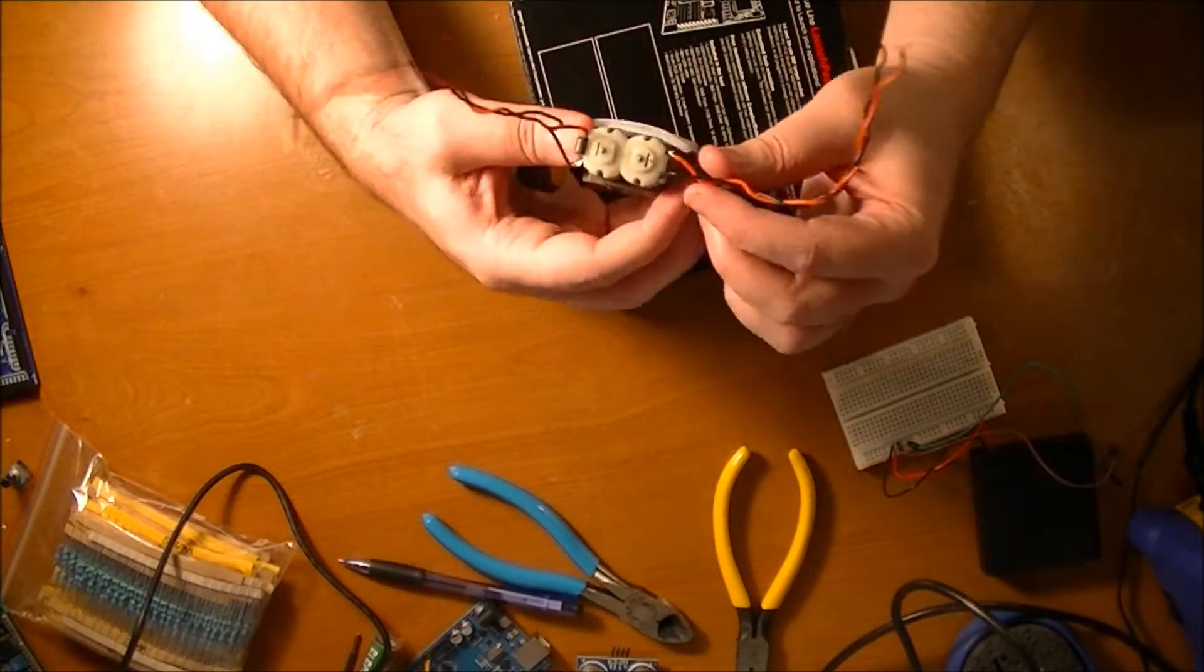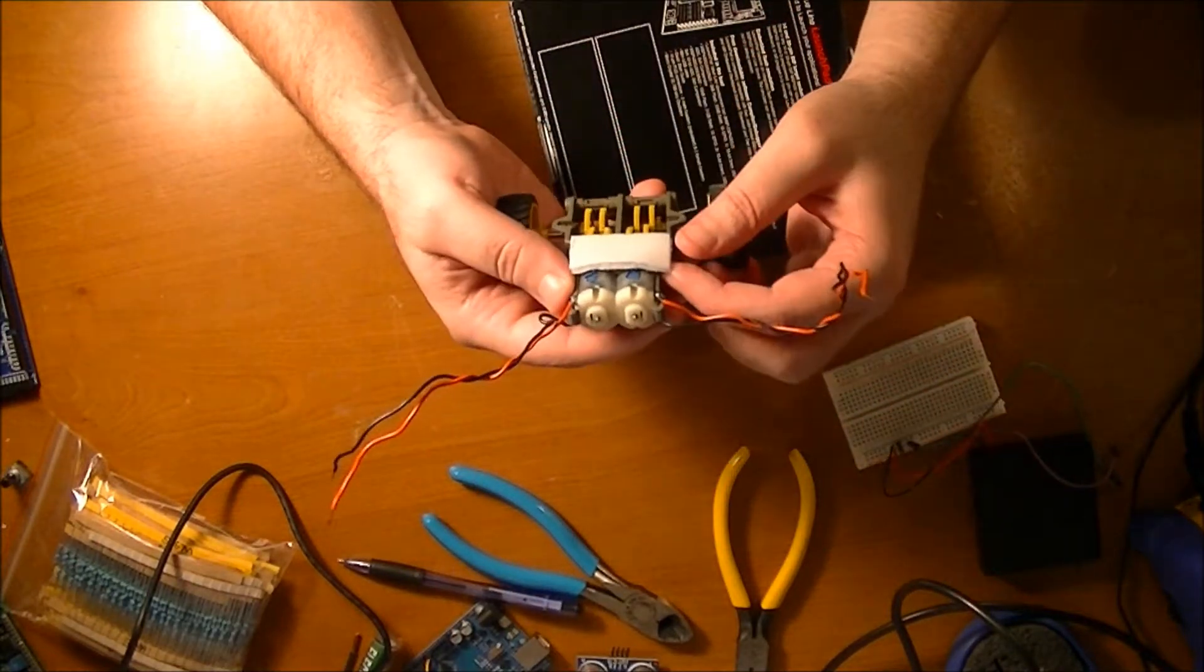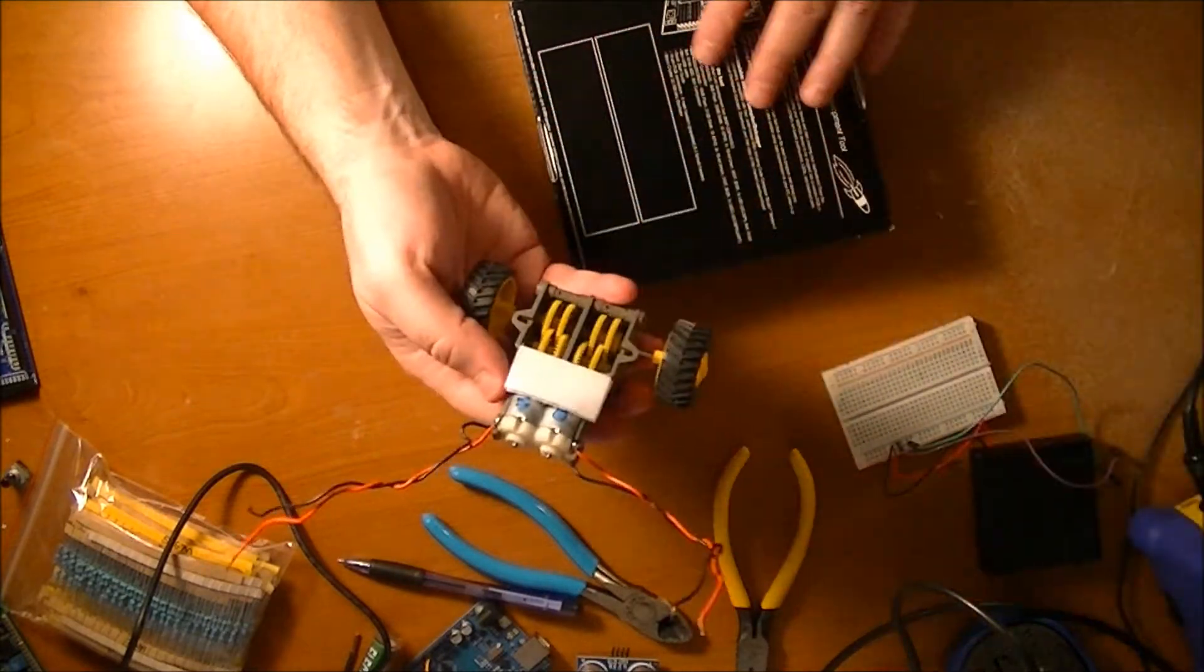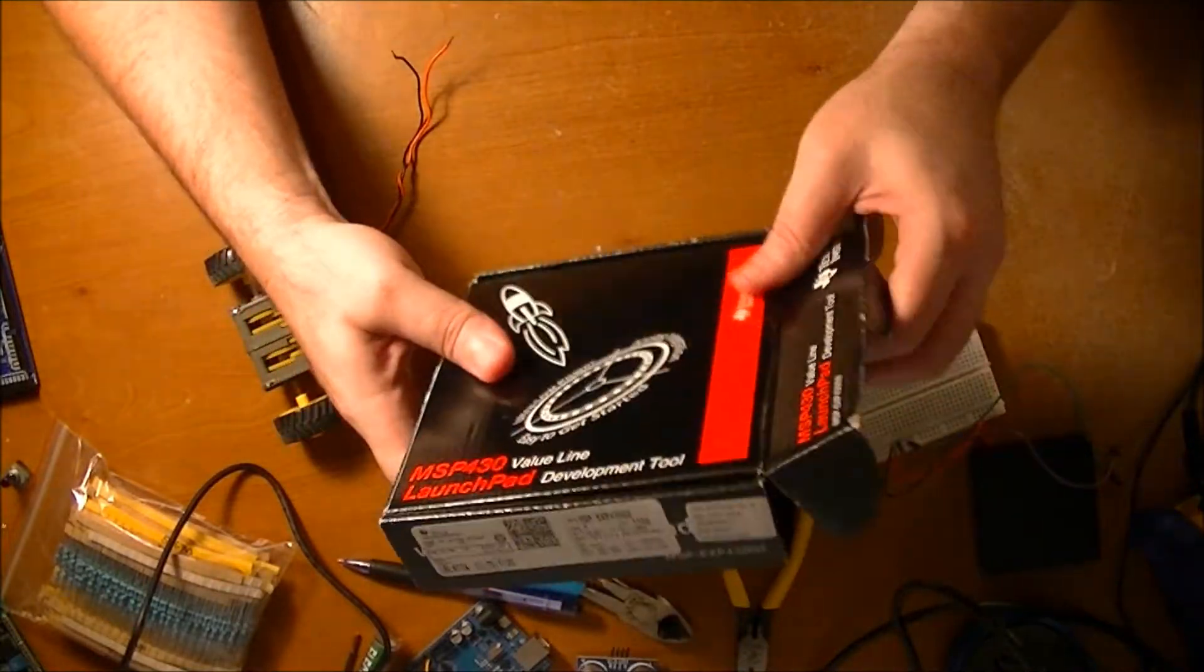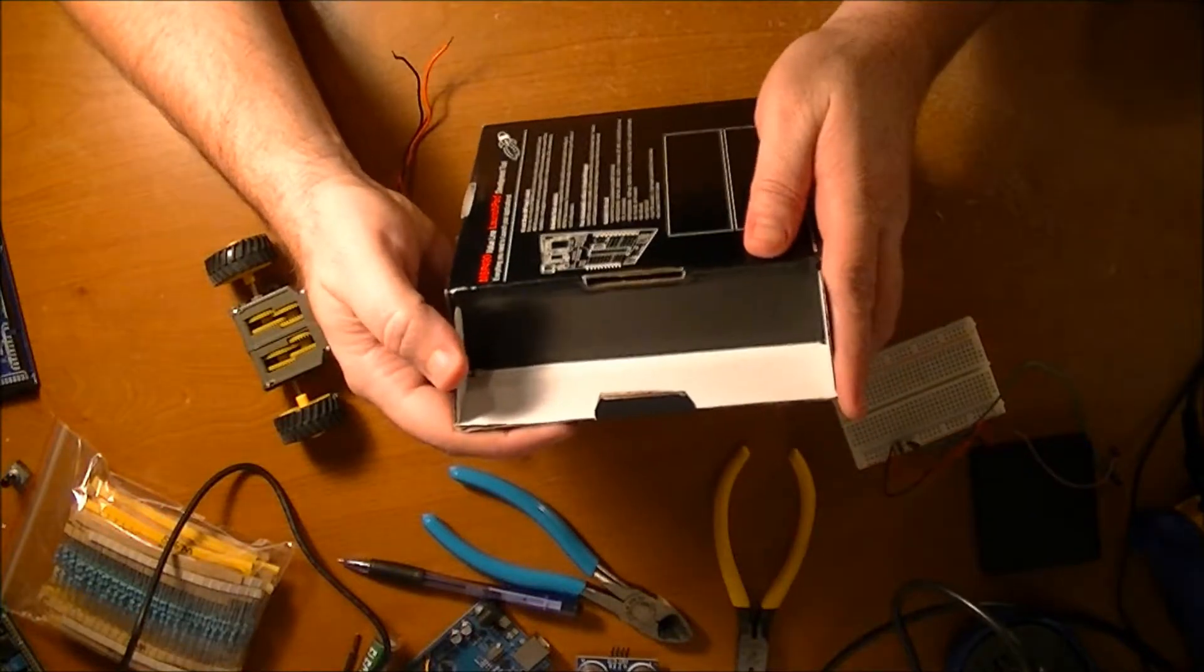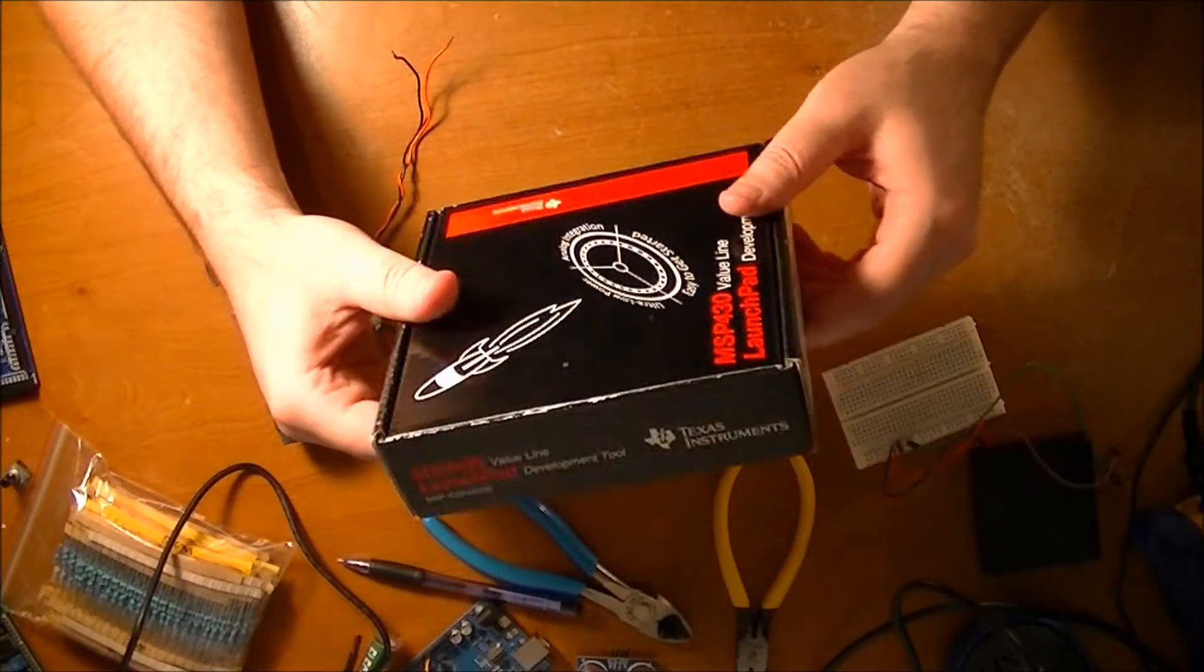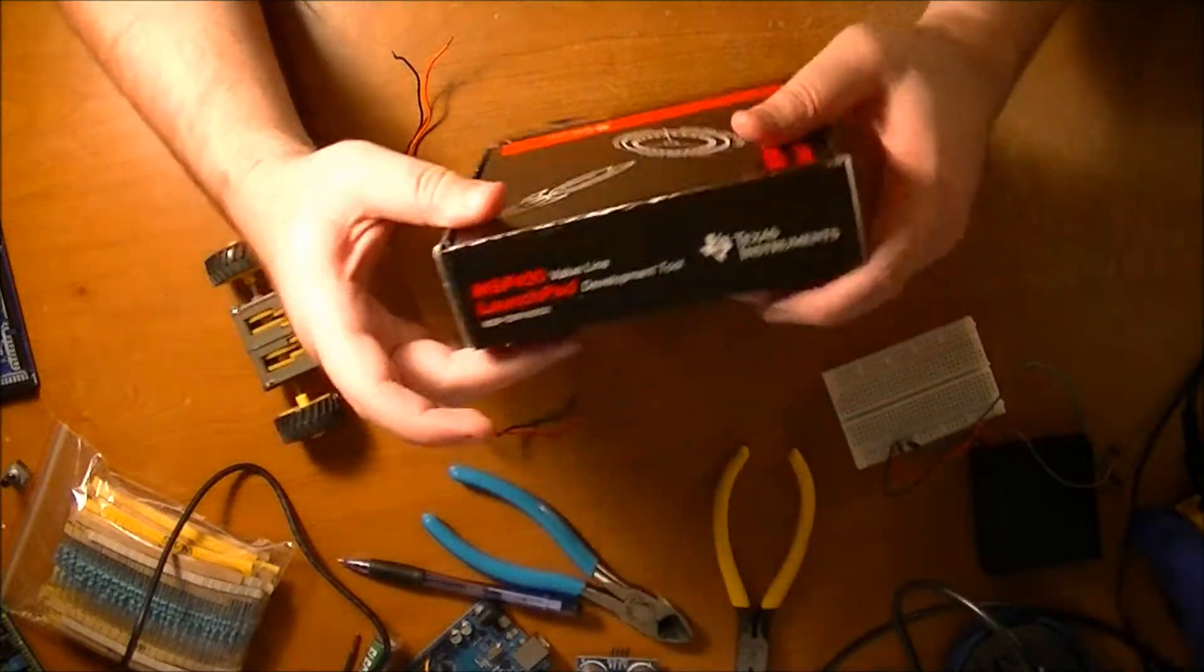You can see I've already got the motors wired up here. If you're doing this project too, you'll have to solder some wires onto the motors, it's pretty easy. But first I'm going to kind of think about how I want this robot to be situated.